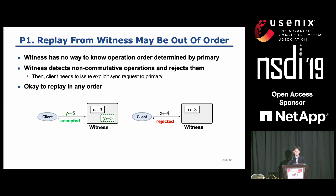The first problem is that the replay execution order during recovery may be different from the original execution order, which can cause inconsistency. When requests arrive at a witness, the witness cannot figure out the execution order determined by the primary. However, we can make it okay to replay in any order by keeping only commutative operations. So if a new client request commutes with all operations saved in a witness, the witness can accept it. But if it doesn't commute with any saved operation, the witness must reject. In that case, the client needs to wait for syncing to backups.